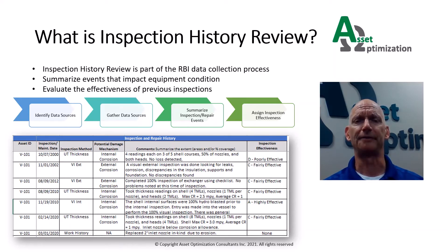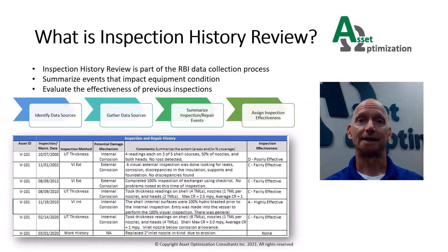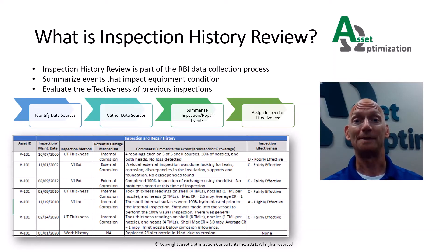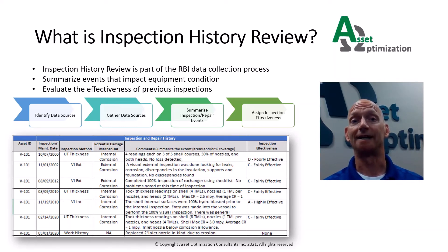History review involves four key steps. One, identifying data sources. These can include inspection records, thickness data, and maintenance records. Identifying your preferred data sources will prevent you from missing important events in an equipment's history, and can help expedite your review.